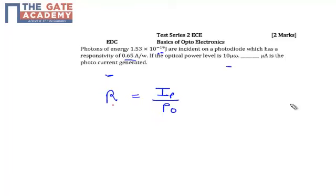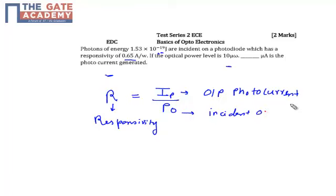where R is the responsivity, IP is the output photocurrent, and P0 is the incident optical power.